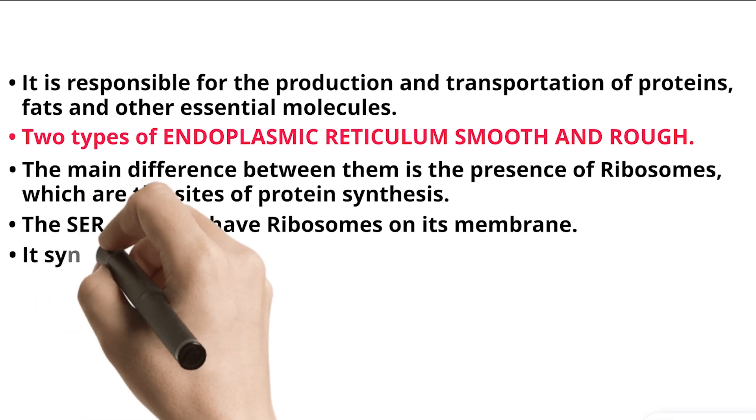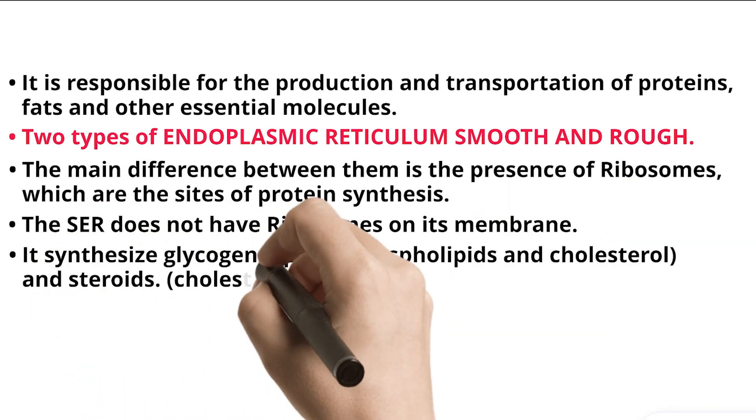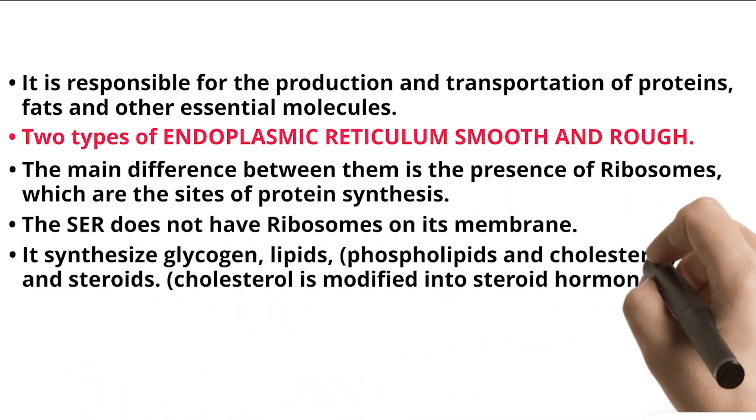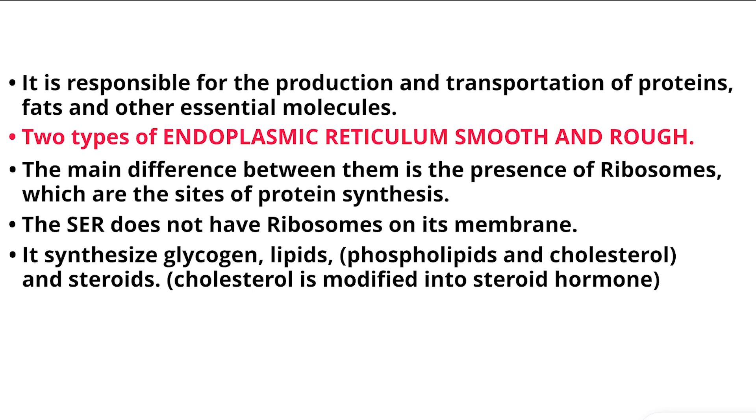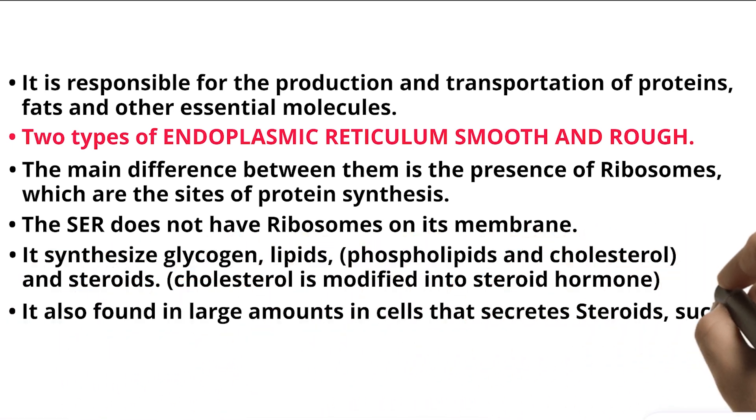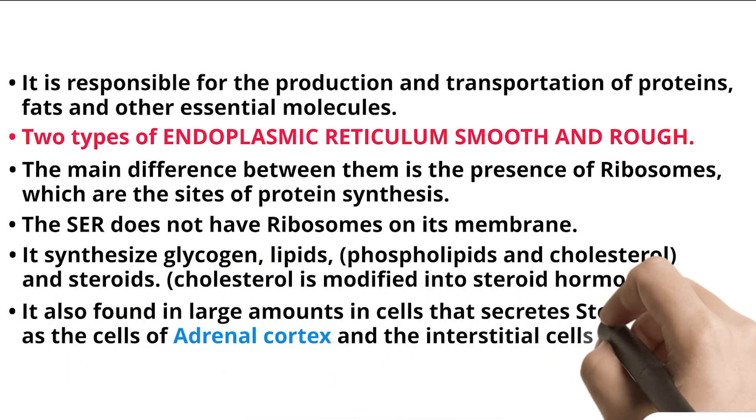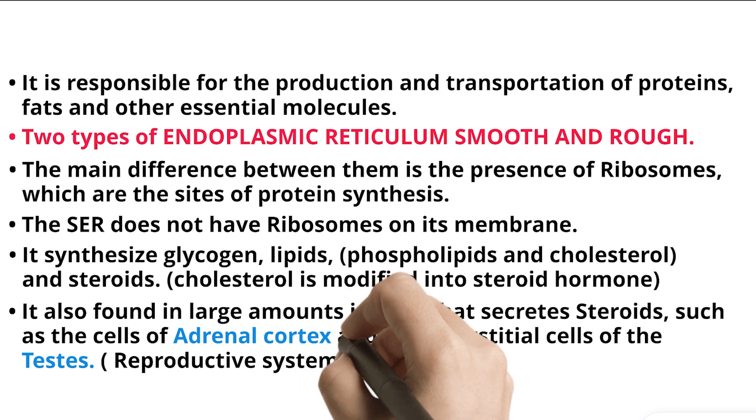It synthesize glycogen, lipids, phospholipids, and cholesterol, and steroids. Cholesterol is modified into steroid hormone. It also found in large amounts in cells that secrete steroids, such as the cells of adrenal cortex and the interstitial cells of the testes.